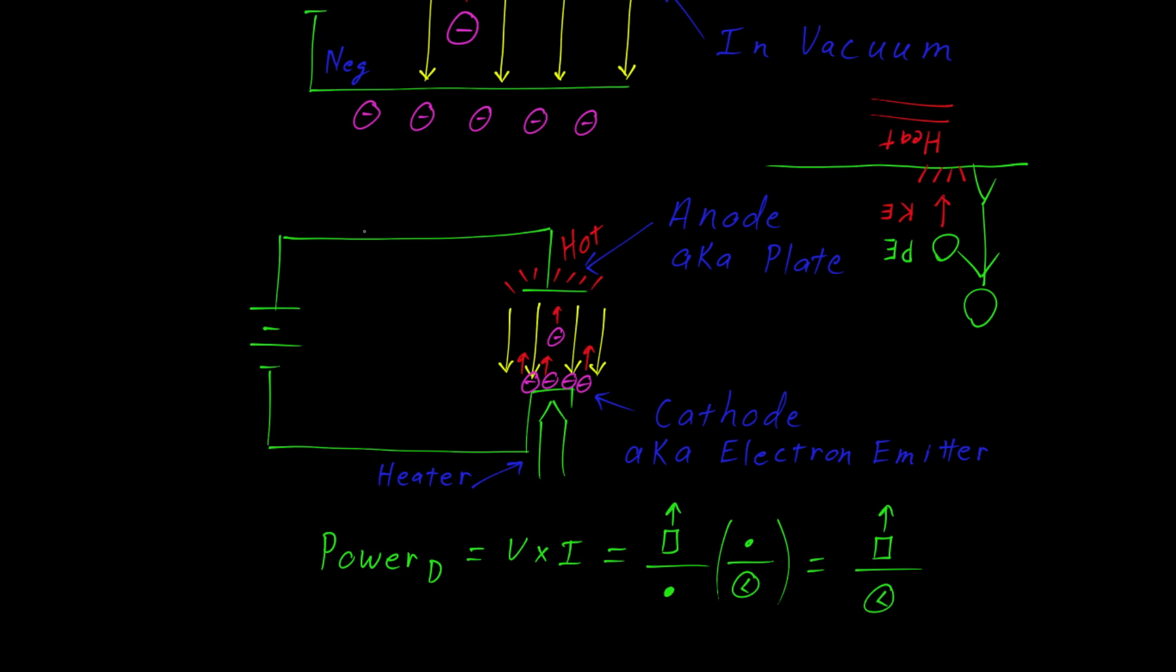And if we wanted, we could add some instrumentation. Here we add a voltmeter, so we can measure the electric field across the vacuum tube. And here we add an ammeter, to measure the amount of current that flows.